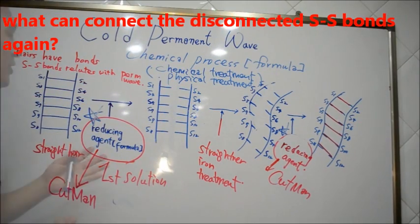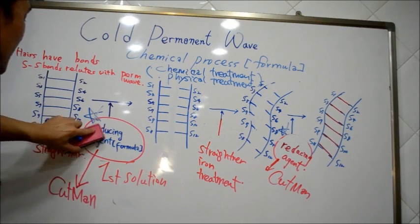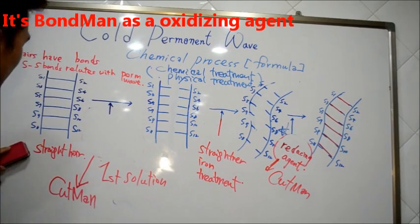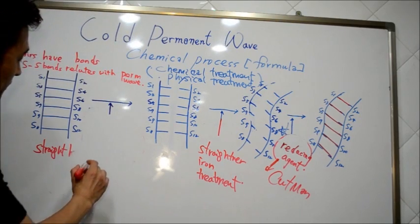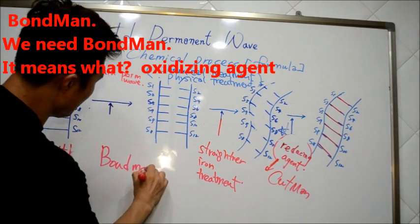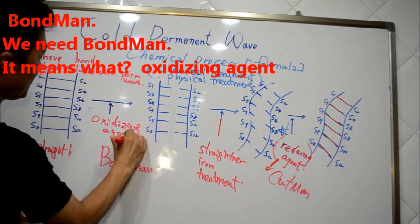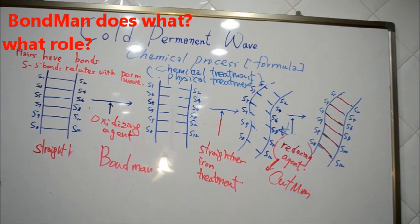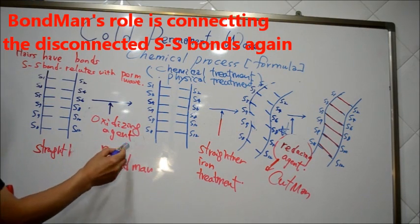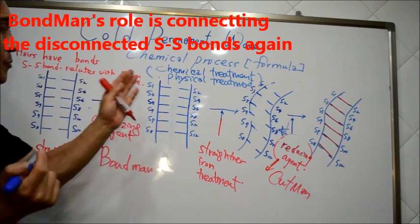Still disconnected. And we can connect the disconnected S-S bonds. You can guess easily - we apply oxidizing agent to reconnect the S-S bonds again.